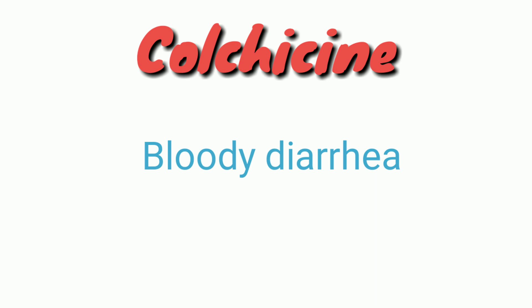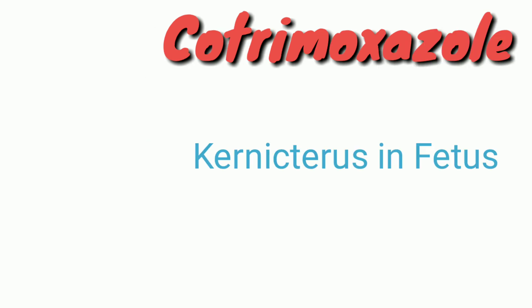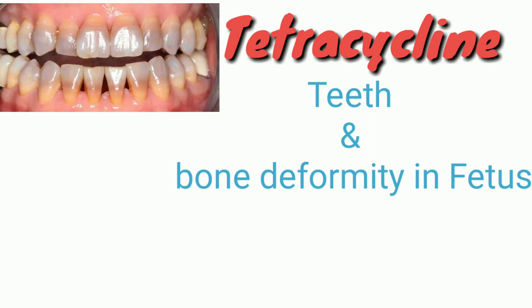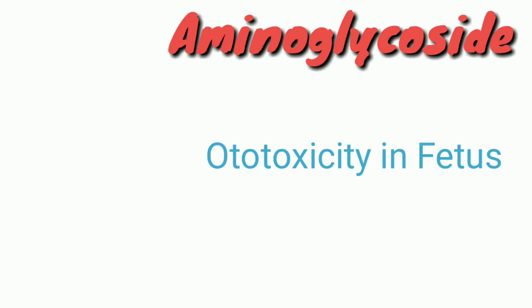Colchicine causes bloody diarrhea because erosion of the mucosa takes place. Cotrimoxazole causes neural tube defects in the fetus. Tetracycline causes teeth and bone deformity in the fetus — it deposits in the teeth.